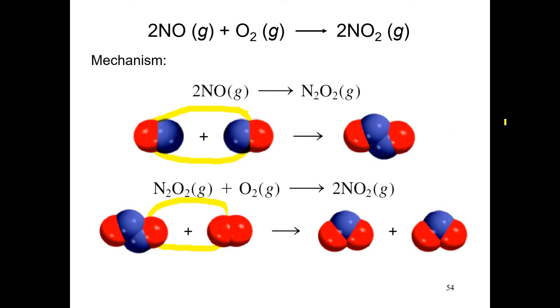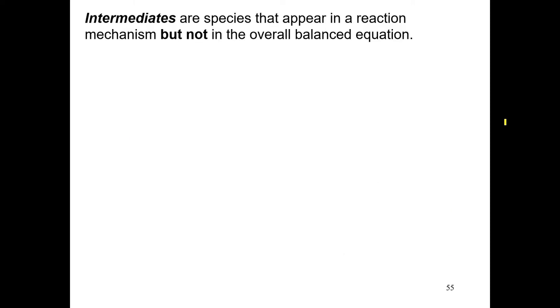So let's look at it in more detail now. First of all, what about this N2O2 molecule that was produced in the first step and then was reacted in the second step? Well, this is what we call an intermediate. Intermediates are species that appear in a reaction mechanism, but not in the overall balanced equation.